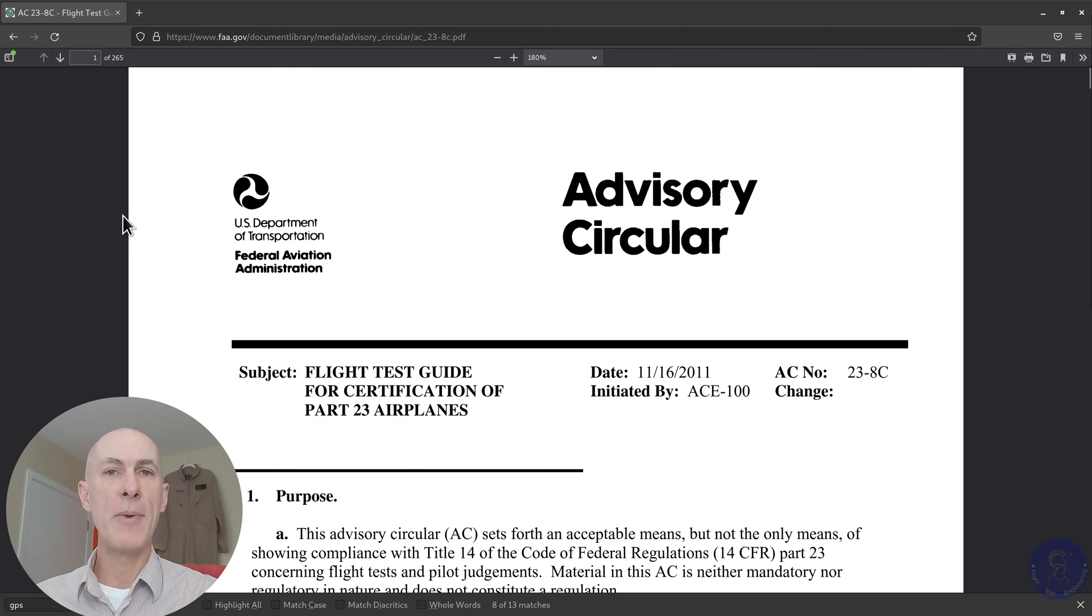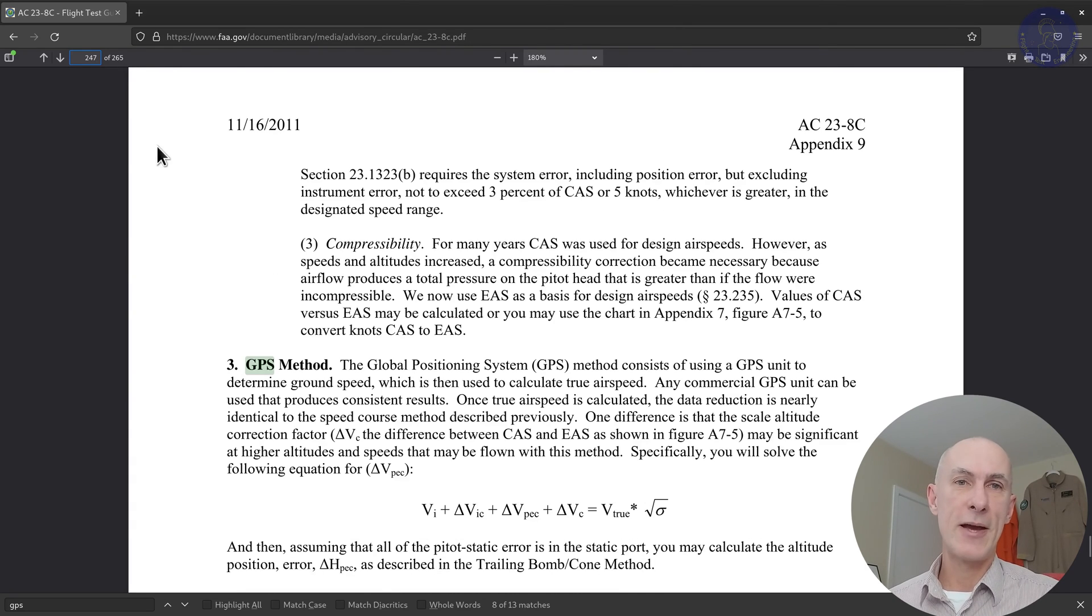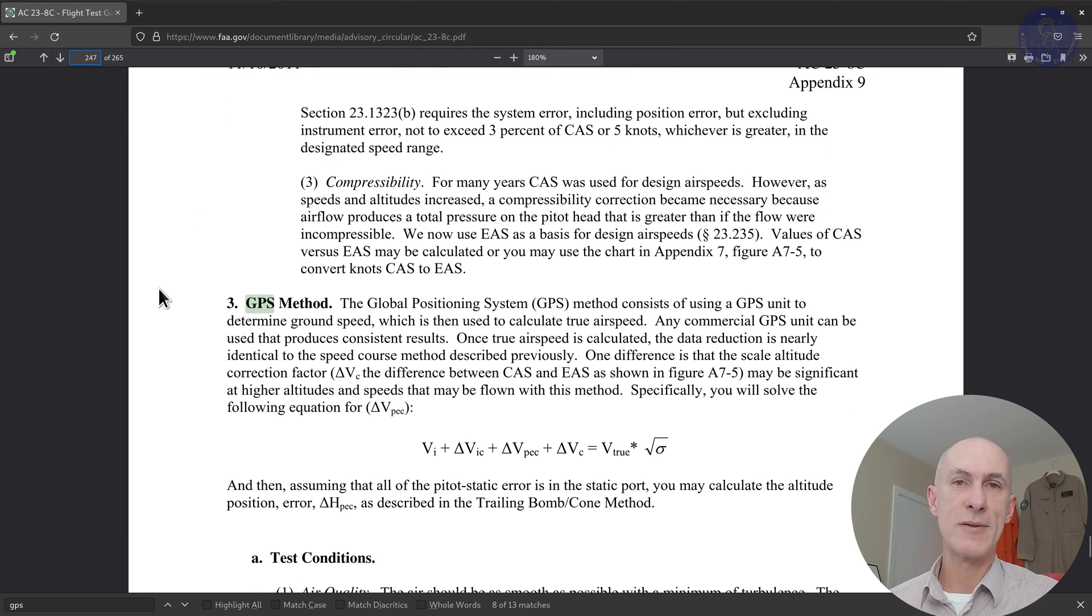Last, the geometric method that we will cover in the first video is what AC23-8 recommends. All links will be in the video description. Quoting AC23-8, the Global Positioning System method consists of using a GPS to determine the ground speed, which is then used to calculate the true airspeed.